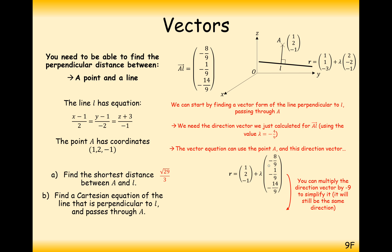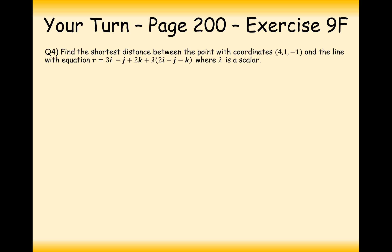We can always scale the direction vector since it still points in the same direction. Multiplying through by minus 9 gives something more pleasant to look at: position (1, 2, minus 1) plus lambda times (8, 1, 14). We also need to convert this to Cartesian form, which doesn't take too long.